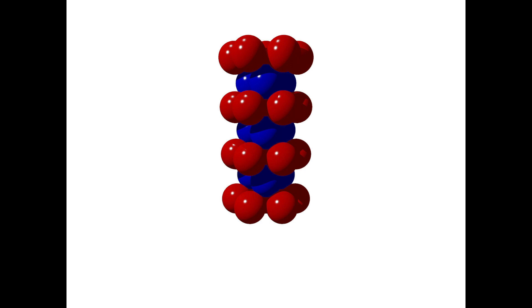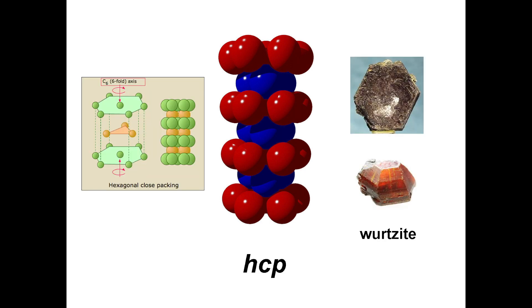A hexagonal close pack structure can be thought of simply as an assembly of these hexagonal columns. In fact, materials that crystallize in HCP often exhibit a hexagonal crystal habit. In other words, the crystals themselves look like hexagonal columns.